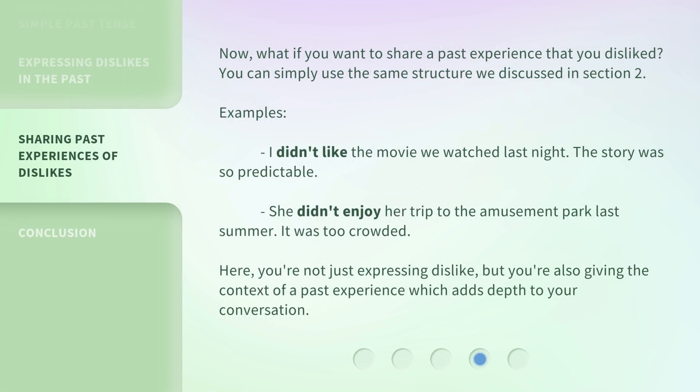Now, what if you want to share a past experience that you disliked? You can simply use the same structure we discussed. Examples: I didn't like the movie we watched last night — the story was so predictable. She didn't enjoy her trip to the amusement park last summer — it was too crowded.